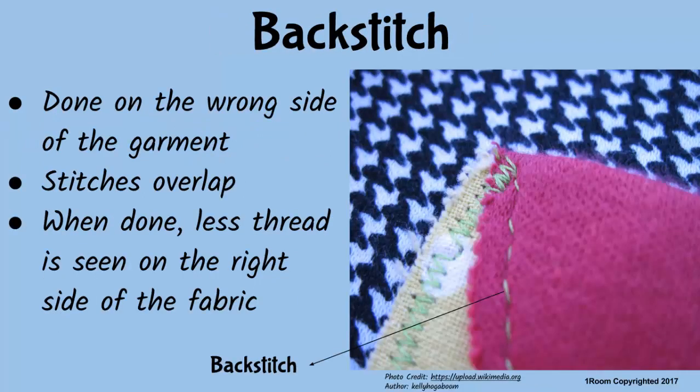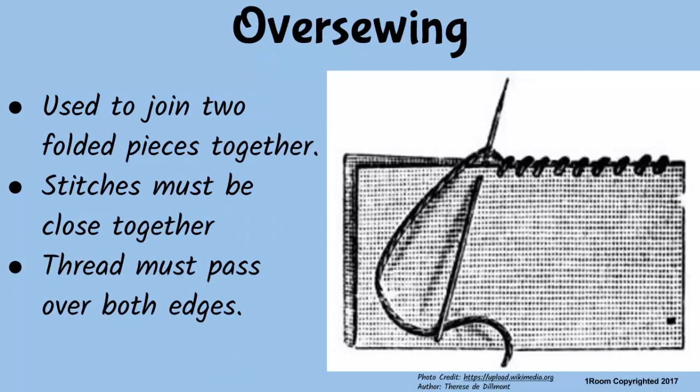The other one is called the back stitch. My mother uses it to mend my clothes. Then tell me about it. I know that it is done on the wrong side of the garment, from the right side to the left, and the stitches overlap. Nice. And to add to that, less thread is seen on the right side of the garment when the work is done.